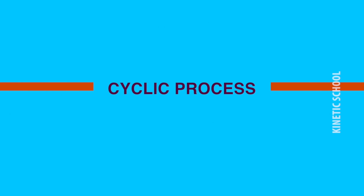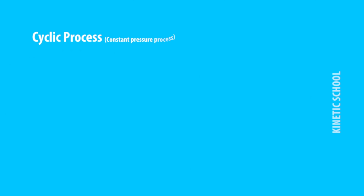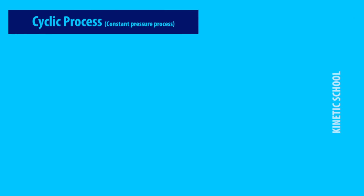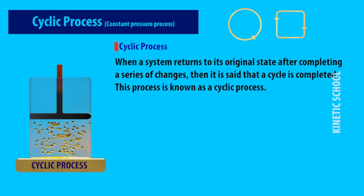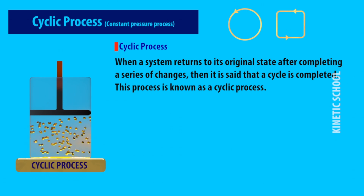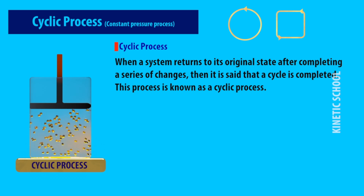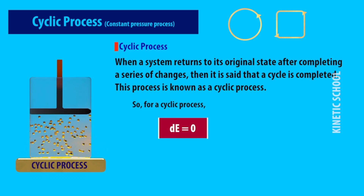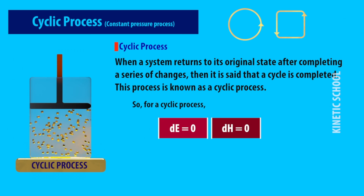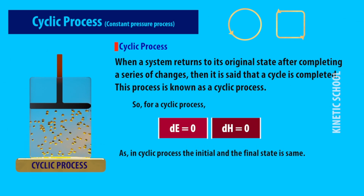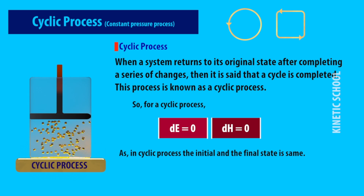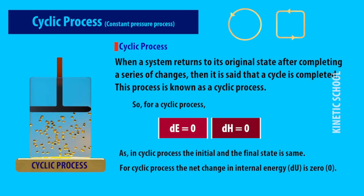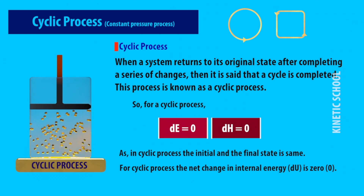The last type is the cyclic process, also known as the constant pressure process. When a system returns to its original state after completing a series of changes, it is said that a cycle is completed, and this process is known as a cyclic process. For a cyclic process, dE is equal to zero and dH is equal to zero, since the initial and final state are the same. Therefore, the net change in internal energy is zero.